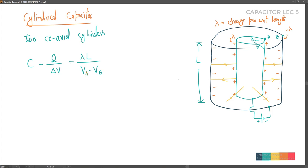To find VA - VB we need to use integration, because the electric field magnitude between the two cylinders depends on the distance r from the center. For a cylindrical shell, the electric field outside it has the same form as for a charged wire: E = λ / (2πε₀r).